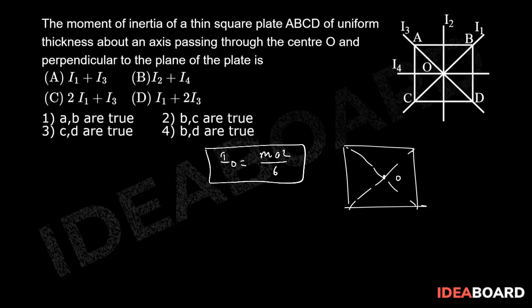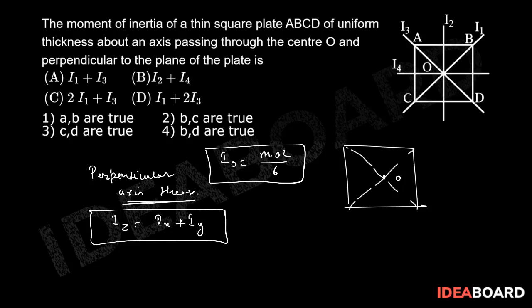From the perpendicular axis theorem, we know that Iz equals Ix plus Iy. In this case, if we assume this is the Y axis with moment of inertia I2, and this one is I4, both are at 90 degrees. So IO will be equal to I4 plus I2.